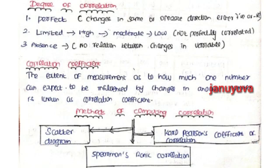Next, Correlation Coefficient — the Correlation Coefficient is a measurement. Next, Methods of Computing Correlation. There are three methods: first, Scattered Diagram; second, Karl Pearson's Coefficient of Correlation; and third, Spearman's Rank Correlation. If you look at these three methods, you can easily use Part A and Part B.